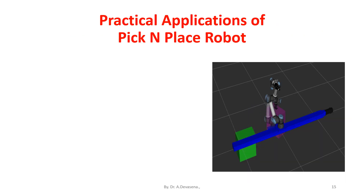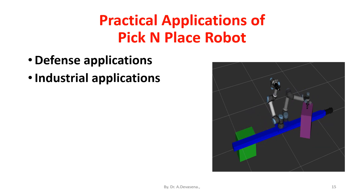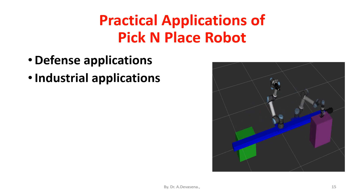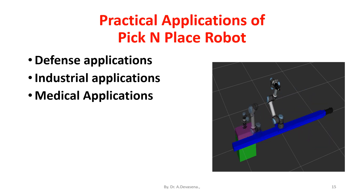Practical applications of pick and place robots. First, defense applications — they can be used for surveillance and also to pick up harmful objects like bombs and defuse them safely. Second, industrial applications — these robots are used in manufacturing to pick up the required parts and place them in the correct position to complete the machinery fixture. Third, medical applications — these robots can be used in various surgical operations like joint replacement, orthopedic and internal surgery operations. They perform operations with more precision and accuracy.